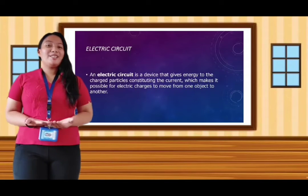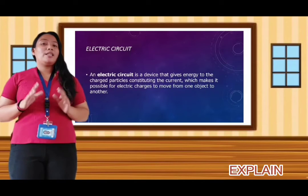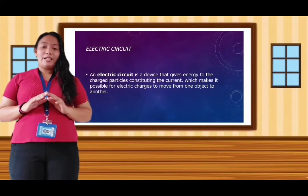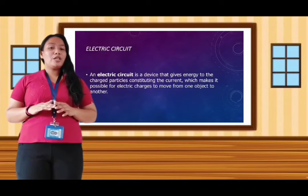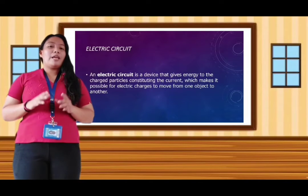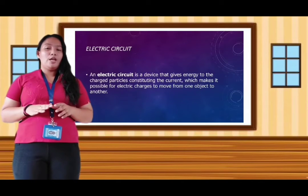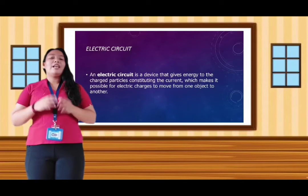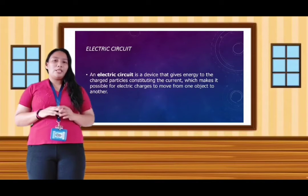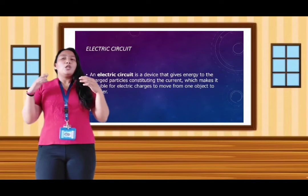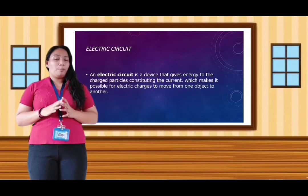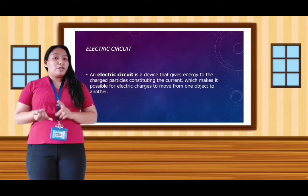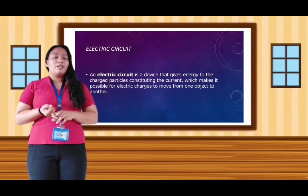What parts of the electric circuit did you pick up along the way during your activity? Let's learn more about that in our discussion. I will now show you a PowerPoint presentation. An electric circuit is a device that gives energy to charged particles and can switch the current, making it possible for electric charges to move from one object to another. Simply put, an electric circuit is a device that gives energy to a device for it to function. The four parts of the electric circuit are: energy source, load, switch, and wire.